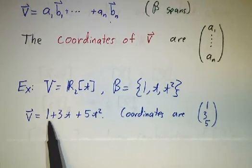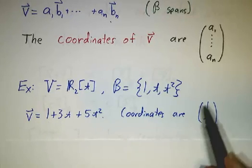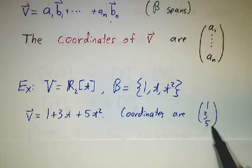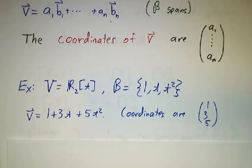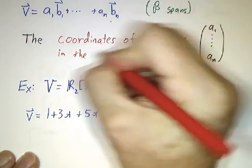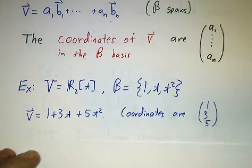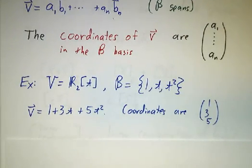Every quadratic polynomial is something times 1 plus something times t plus something times t squared. If I gave you the vector 1 plus 3t plus 5t squared, the coordinates would be 1, 3, and 5. I should say the coordinates of v in the β basis, because different bases will give rise to different coordinate systems.